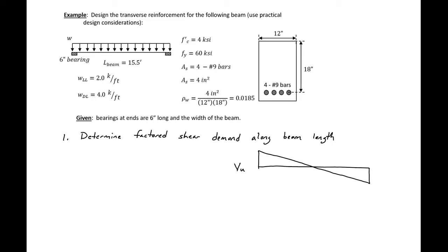In this example problem, we're going to design the transverse reinforcement for the following beam using practical design considerations. This means we're going to use the ACI simplified expressions for concrete strength and a constant spacing along the entire beam length.